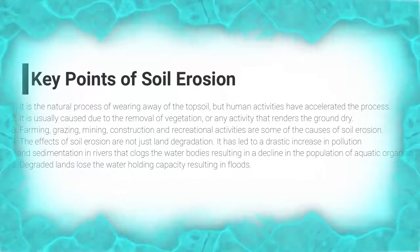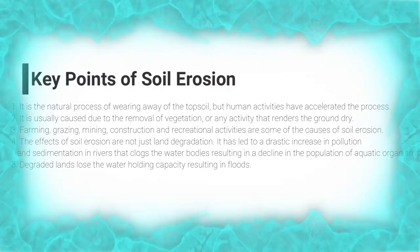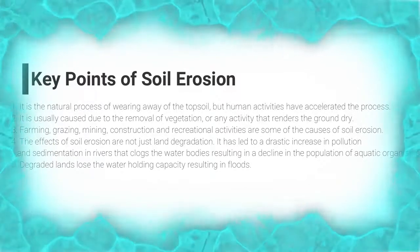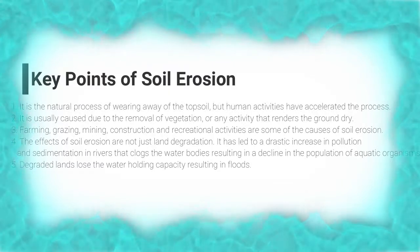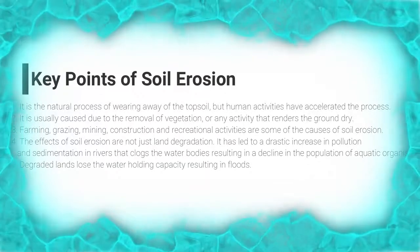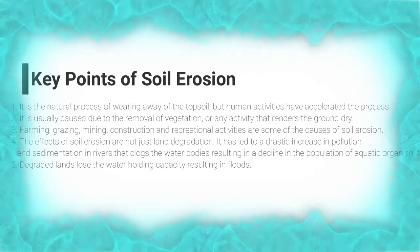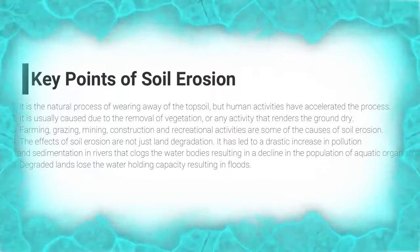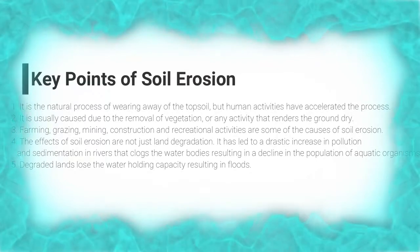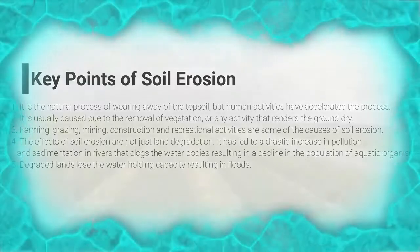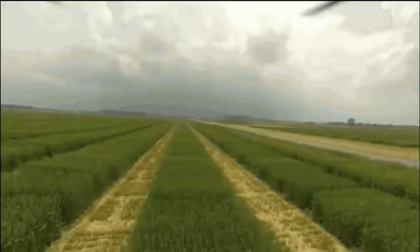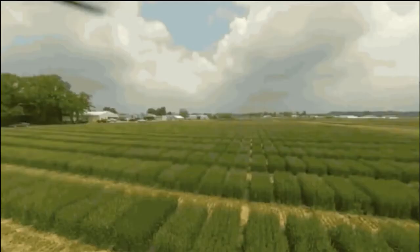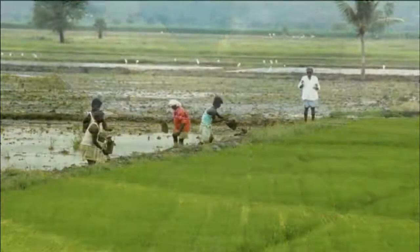The effects of soil erosion are not just land degradation. It has led to a drastic increase in pollution and sedimentation in rivers that clogs the water bodies, resulting in a decline in the population of aquatic organisms. Degraded lands lose the water holding capacity, resulting in floods. The health of the soil is of utmost importance to the farmers and the population that depends upon agriculture for food and employment.